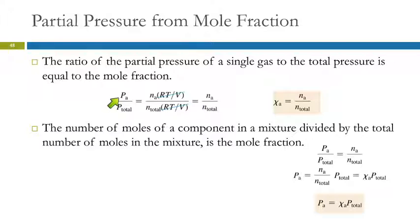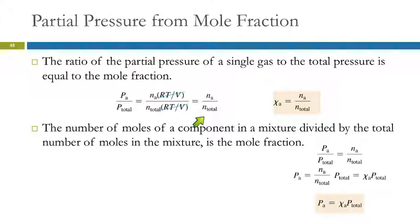If we look at the pressure from gas A, that equals moles of gas A times RT/V. The total pressure is the total moles times RT/V. Canceling RT/V, we find that the partial pressure of an individual gas divided by the total pressure equals the mole fraction for that gas. So if we know the partial pressure and total pressure, we can find the mole fraction — or if we know the mole fraction and total pressure, we can find the partial pressure. The partial pressure of a gas equals the mole fraction times the total pressure.